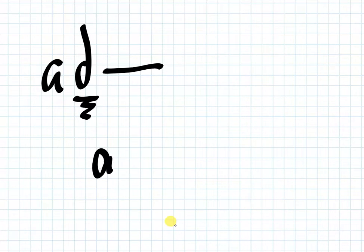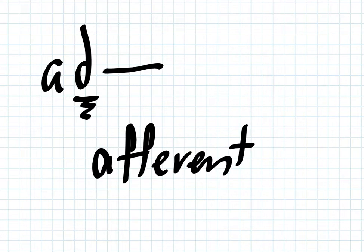So a word that this occurs in is afferent. So like an afferent neuron goes towards the brain. This D turned into an F. A lot of times this D is going to turn into essentially the consonant of the next root word. The beginning of the root word.